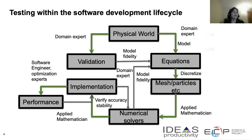Domain experts should also do the validation checks, which come from the physical world and the mathematical properties of their models. They need to look at things like conserved quantities and analytical solutions. Then we have applied mathematicians who work with solvers and discretizations. They should contribute a good understanding of function spaces, convergence criteria, and they need to address fidelity, accuracy, and stability of the model.